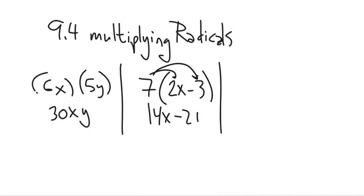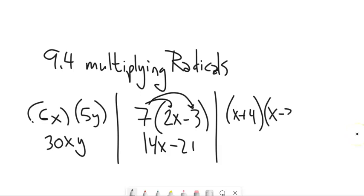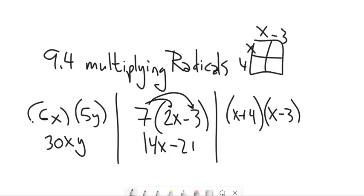Two more understandings we have about multiplication: if I have something like (x + 4) times (x − 3) and I want to multiply that out, we can make a box and do the array method, or we can distribute everything to everything — x times x, 4 times x, x times negative 3, 4 times negative 3 — and then combine like terms.